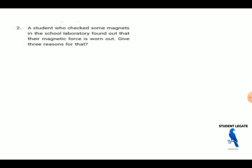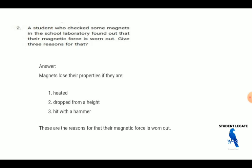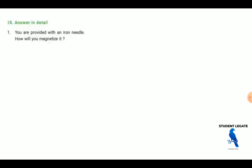The students who checked some magnet in a school laboratory found out that there is a magnetic force in a worn out. Give the three reasons for that. The magnetic loss property by these three. This is the reason for the magnetic force is warm-up, warmed-out. We will breathe out students.